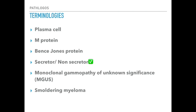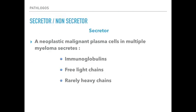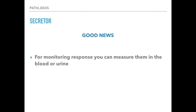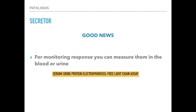Next we'll discuss what are secretors and non-secretors in a case of multiple myeloma. The neoplastic malignant plasma cells that secrete immunoglobulins, free light chains, or rarely heavy chains are called secretors. The good news about secretors is that for monitoring the response to treatment, you can measure these immunoglobulins or light chains in urine or blood by serum or urine protein electrophoresis or by doing a free light chain assay.